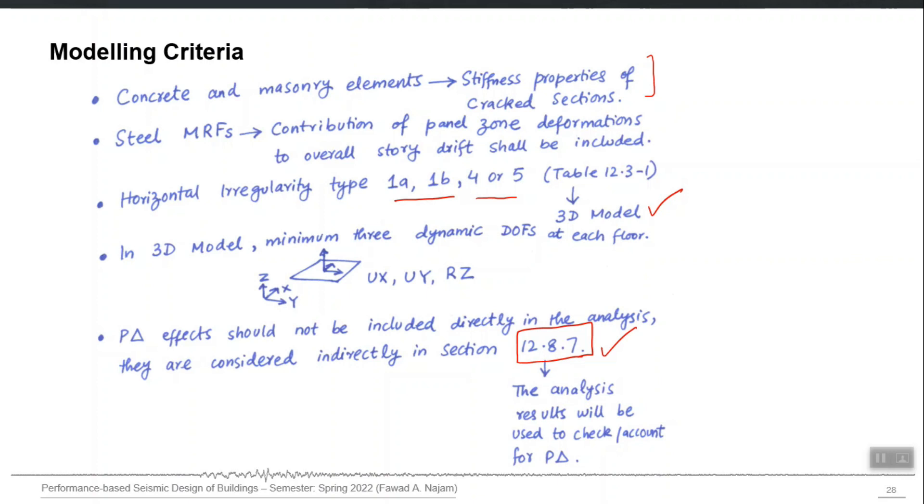For example, base isolated buildings. If we have a structure which is supported on some isolation mechanism, and if the uplift of a particular column can cause a significant threat to that isolation mechanism, then we must perform that analysis in the up-down direction, vertical time history analysis.